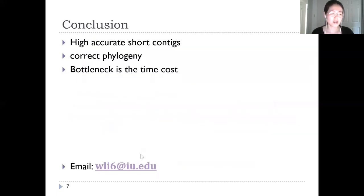So in conclusion, ViPRA-Haplo can reconstruct high-accuracy short contigs and retain the correct phylogeny of the true viral haplotypes. The bottleneck is the time cost.